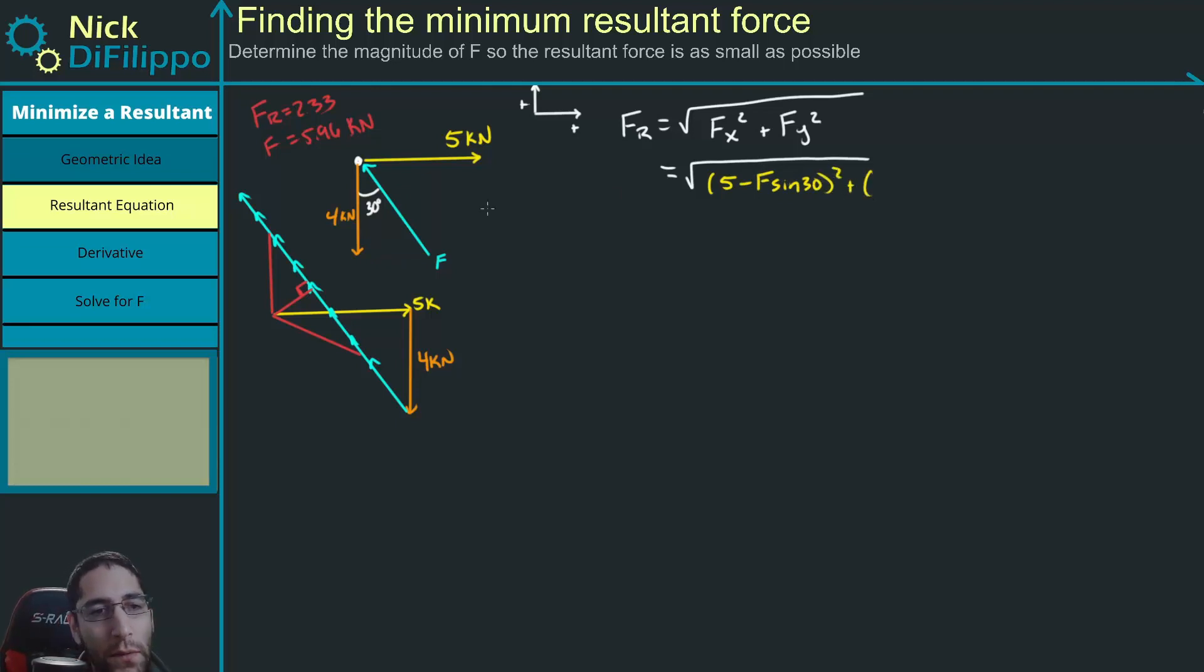So then plus, well, what's happening in the y-direction? 4 is pointing downward, so it's a minus 4. And this F is pointing upward, so it's a positive. That component is F times the cosine of 30 squared. And all that's under the square root. And this is equal to FR.